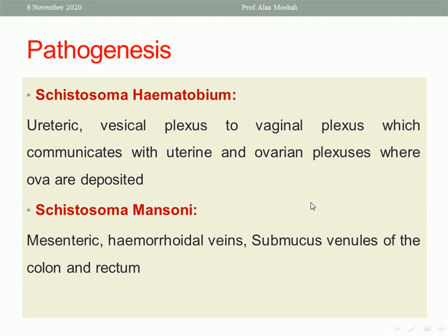Schistosoma hematobium travels through the vesicular plexus to the vaginal plexus, which communicates with the uterine and ovarian plexus, where eggs are deposited and induce an inflammatory reaction. In the case of Schistosoma mansoni, it travels through the mesenteric and hemorrhoidal veins, then the submucosal venules of the colon and rectum. This is the journey of Schistosoma hematobium and mansoni.